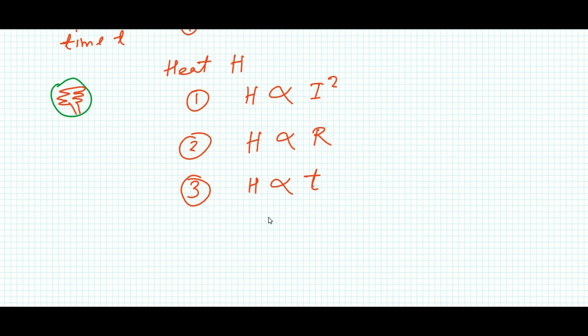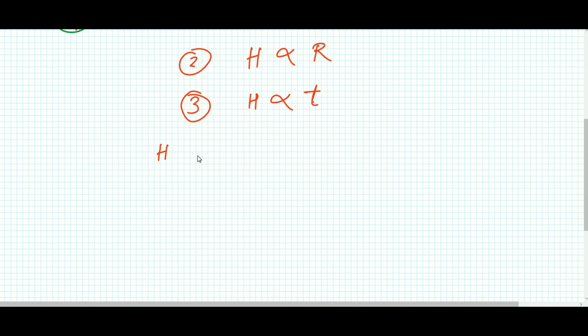And the third one is that heat generated is directly proportional to the time taken in which the current passes from one end to another end. This T is in seconds or hours, whatever time unit you select. But I will show you by combining all three equations what happens.